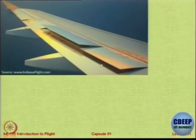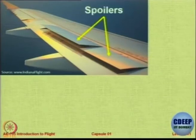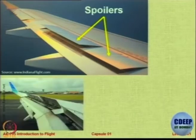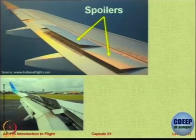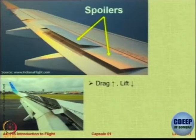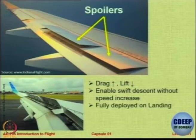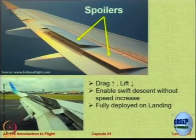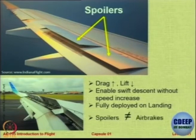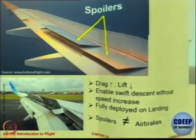What are these? Are they air brakes or spoilers? They are spoilers. After landing you want to kill the lift — you want to spoil the lift. So you push this plate up, which creates more drag helping to reduce the landing distance, kills the lift, and allows you to descend swiftly without speed increase. These are deployed on landing, typically automatic — as soon as the landing gear touches down, spoilers go up. Interesting thing: spoilers are not air brakes. Air brakes are different.